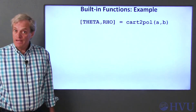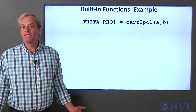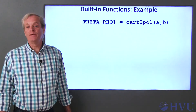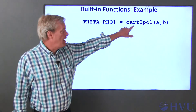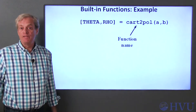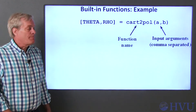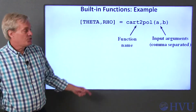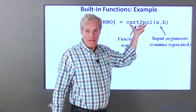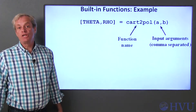User-defined functions operate the same way as Octave's built-in functions, and they're created similarly to script files. Before talking about user-defined functions, I'll review built-in functions in the context of Octave's cart-to-pole command. All functions have to have a name — this function's name is cart-to-pole. Functions accept a list of input arguments, which are placed in a comma-separated variable list in parentheses after the function name. The input arguments provide the information that the function needs to do its job.